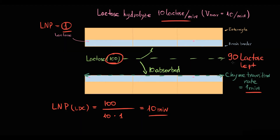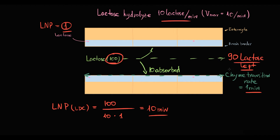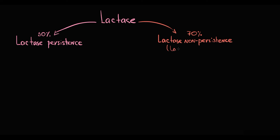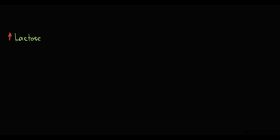These undigested lactose molecules will then enter the large intestine, where they accumulate and cause clinical symptoms. As a consequence of lactase non-persistence, the majority of humans during adulthood are unable to digest all lactose molecules that enter the small intestine. Such people are called lactose intolerant, and as a result, a pathological amount of lactose molecules enters the large intestine.